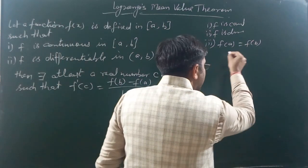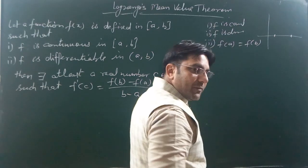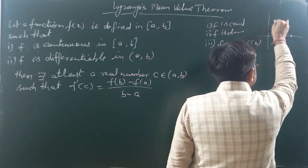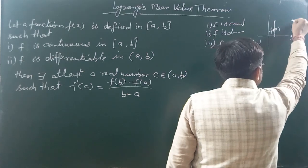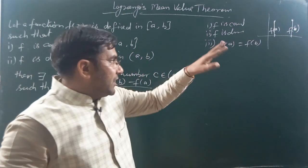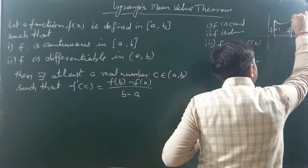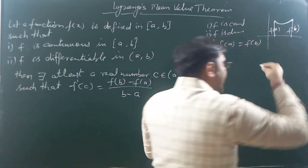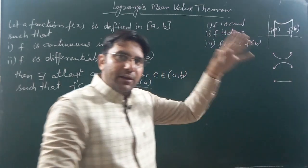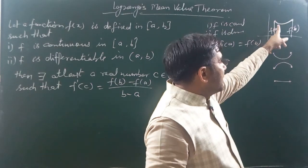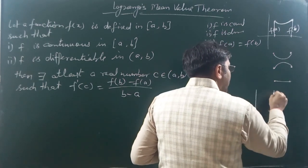For the geometric interpretation, consider a diagram where x equals a and x equals b are given. Suppose any function's graph is drawn. In Rolle's theorem, the two points on the graph at x=a and x=b — called f(a) and f(b) — were at the same height. The condition was that f(a) should equal f(b). In Lagrange's theorem, f(b) is not equal to f(a): when these two points are not at the same height, f(b) may be higher than f(a).